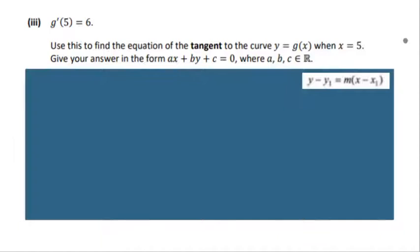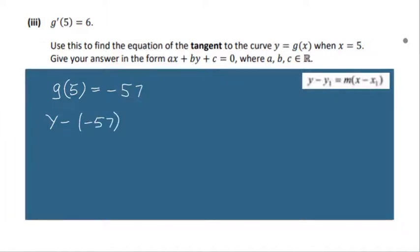On to part 3, and we're given some information about a tangent. We have the slope, so we need to recognize that g dash of the value of x, when put into the g dash formula, gives the slope. We have everything we need: we have 5 inputted into the equation, and g of 5 gives the y1 value, which is negative 57. So we have x1, m, and y1. Let's put it all together into the line equation: y minus y1 is y minus negative 57, equal to 6 — our slope — by x minus 5.